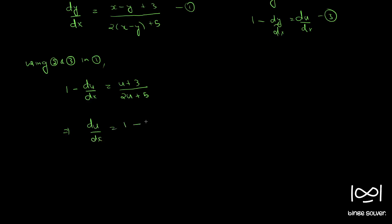So du by dx is equal to 1 minus u plus 3 by 2u plus 5. So, this is also equal to 2u plus 5 minus u minus 3 by 2u plus 5.